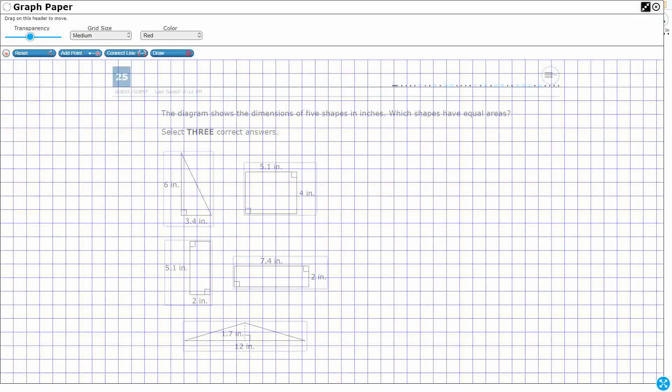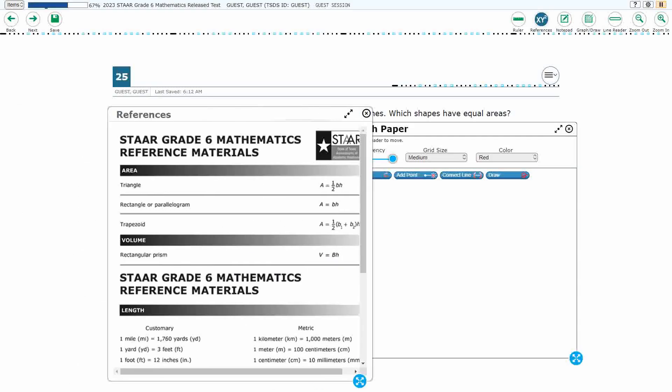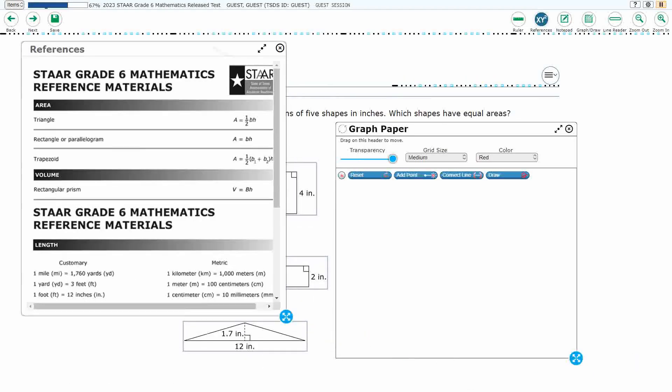So let's open up our graph draw feature. We're going to have to just calculate the area of all five of these, and let's go ahead and have this open as well, just in case we need it.